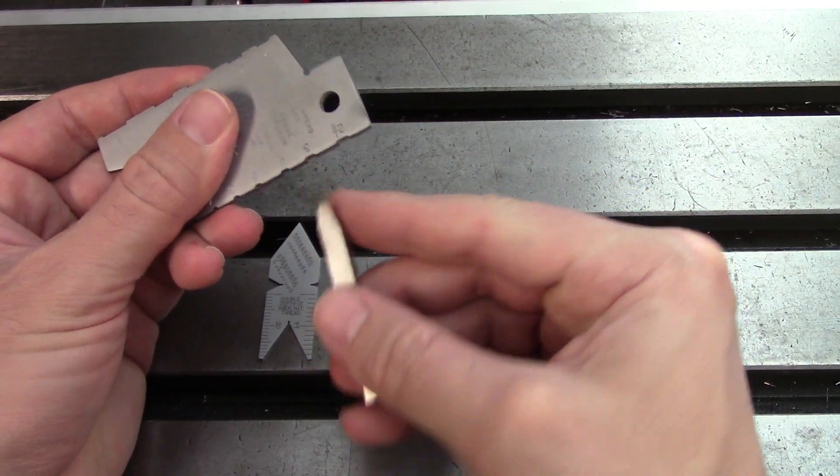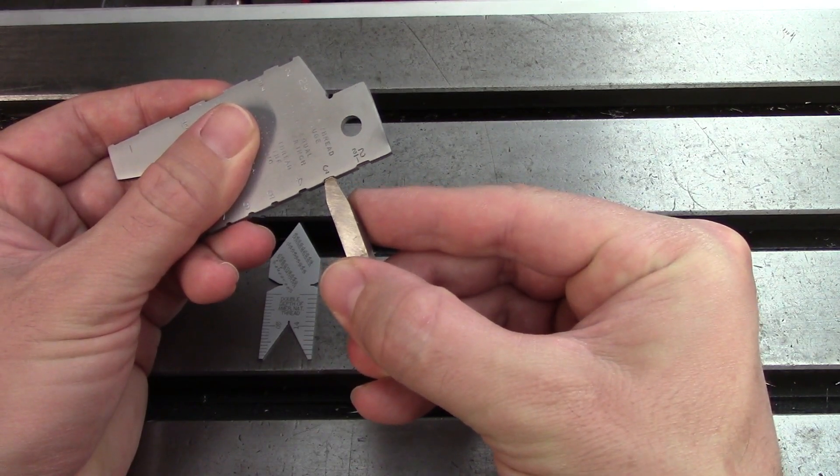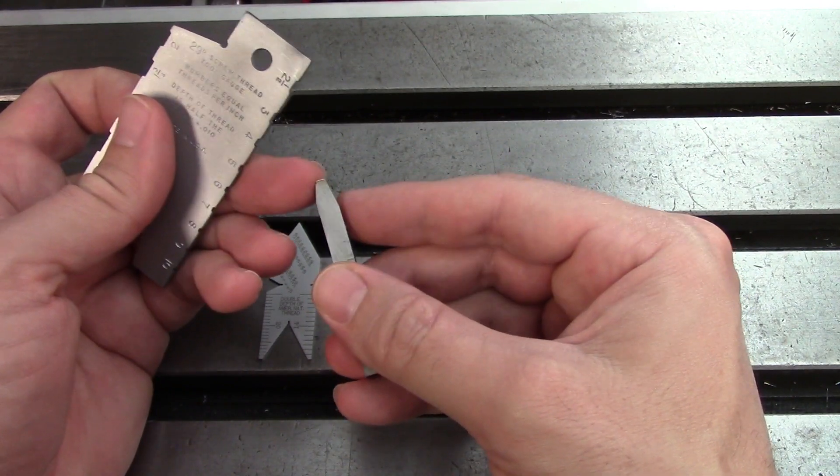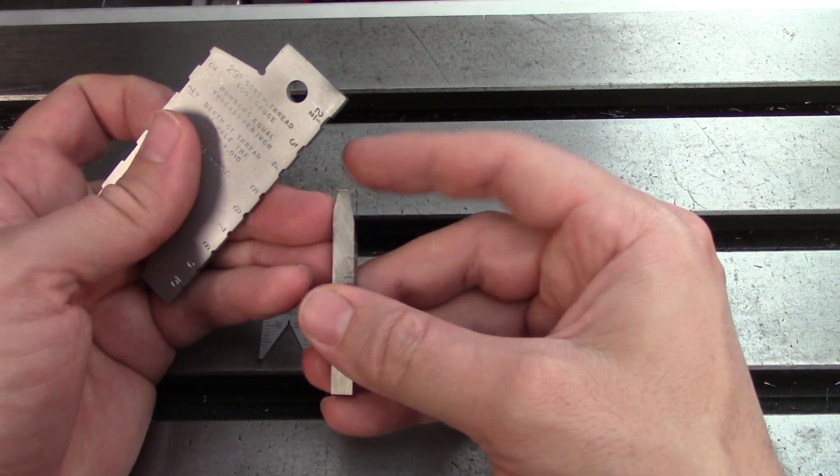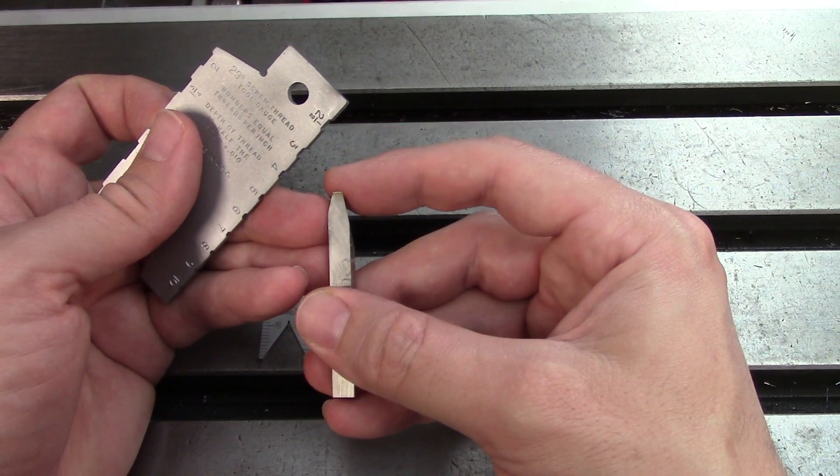If I were going for three threads per inch this is actually a little bit too narrow. I can shake that tool around in there. So I would need to increase the width of the flat which is real easy. You just grind on the end. That's going to go very fast because there's not much material there so it's very easy to go too far.